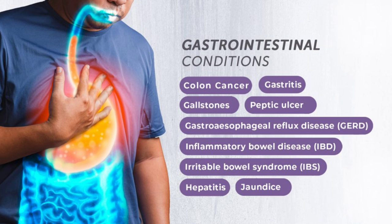Alcoholic liver disease is very important. There will be a history of heavy alcohol consumption and derangement in liver function tests. Key point: AST and ALT are both raised, but AST will be double the value of ALT. Positive GGT is also related to alcoholic liver disease.